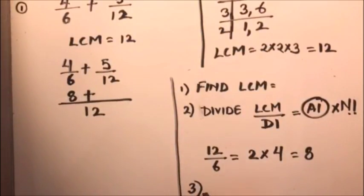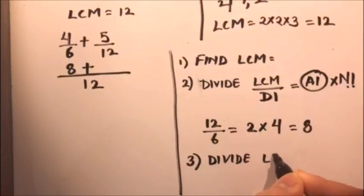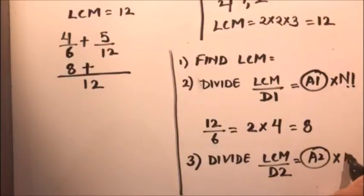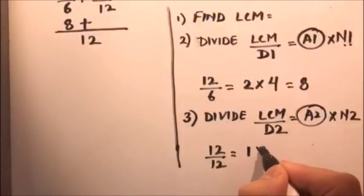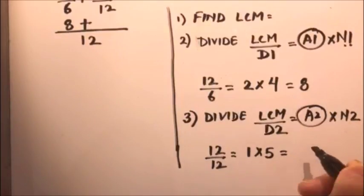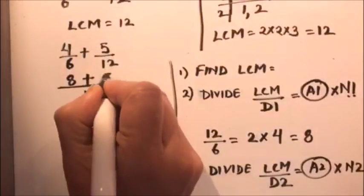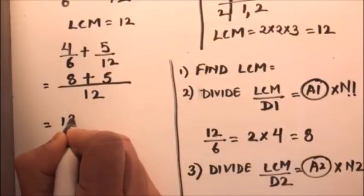Step three: divide the LCM by the denominator of the second fraction, and whatever number we get, multiply it by the numerator of the second fraction. Here, twelve divided by twelve is one, and one multiplied by the second numerator five gives five. So we write five here.